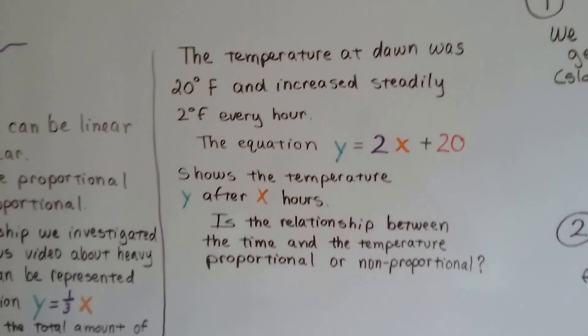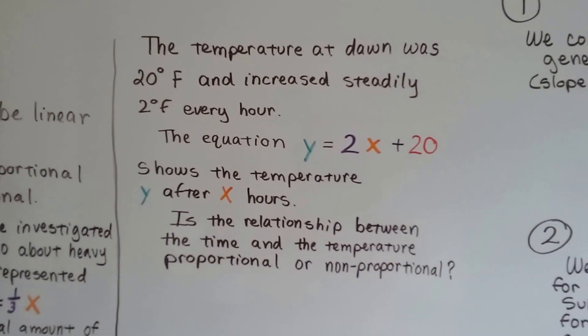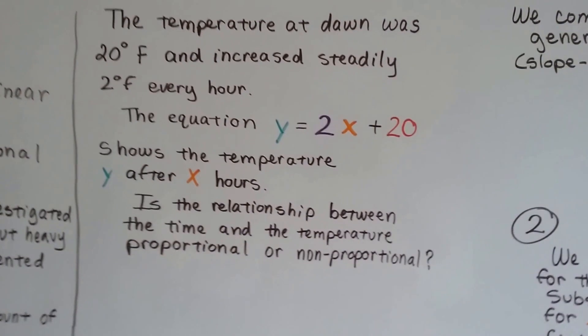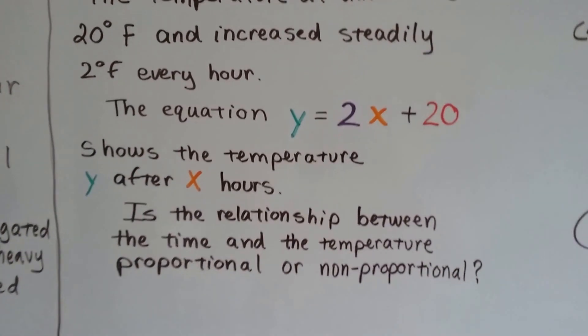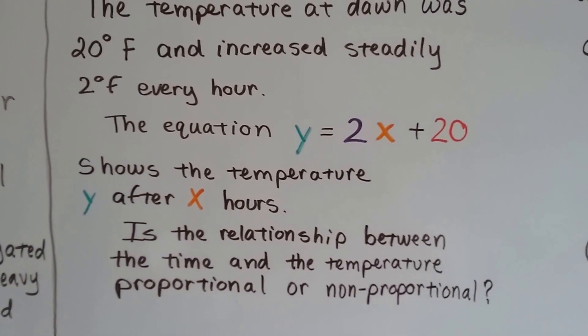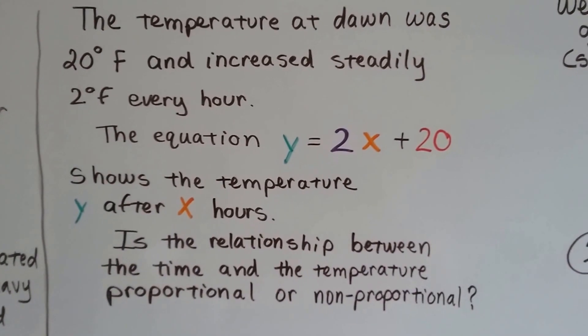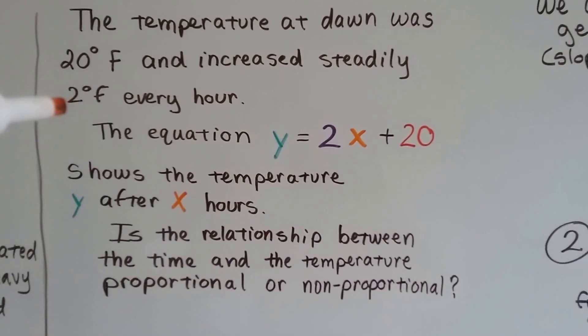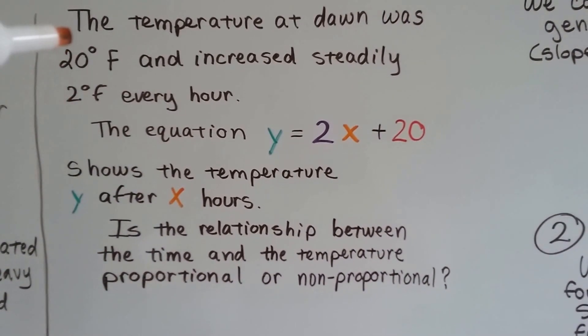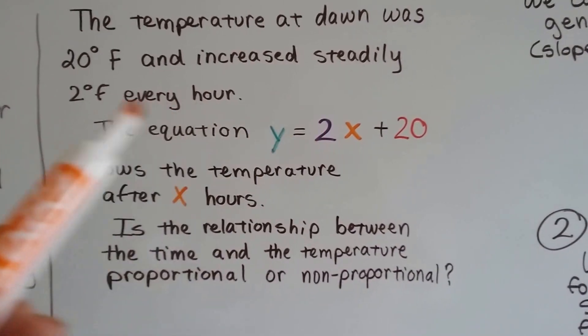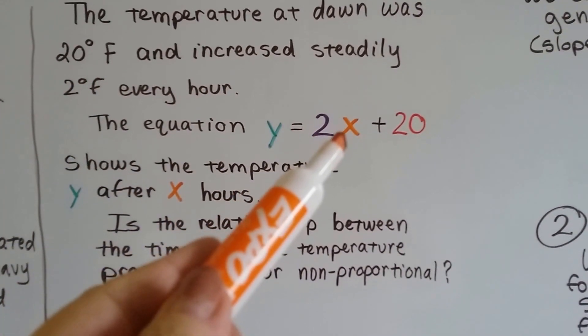So here's our new one. The temperature at dawn was 20 degrees Fahrenheit and increased steadily 2 degrees Fahrenheit every hour. The equation would be y equals 2x plus 20. Here's the 2, and here's the 20.